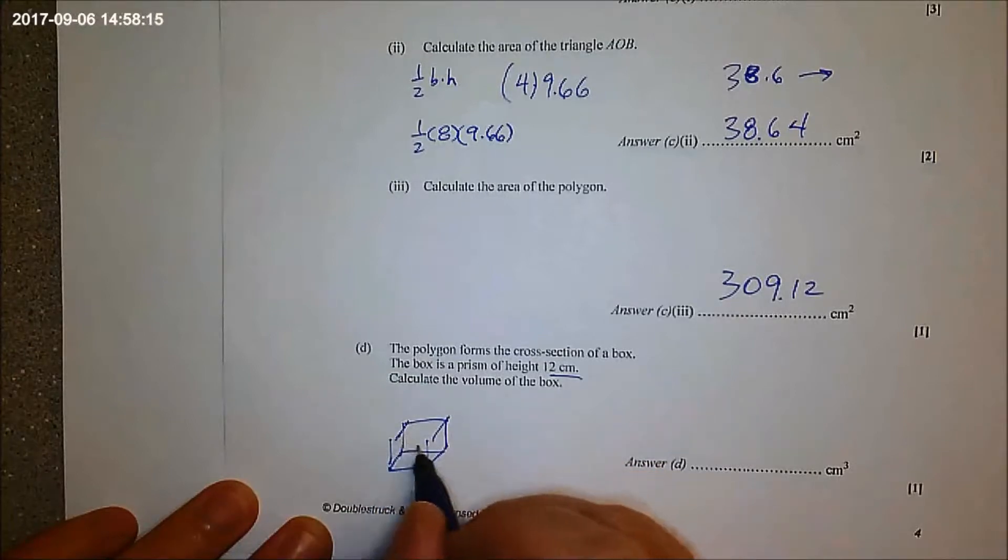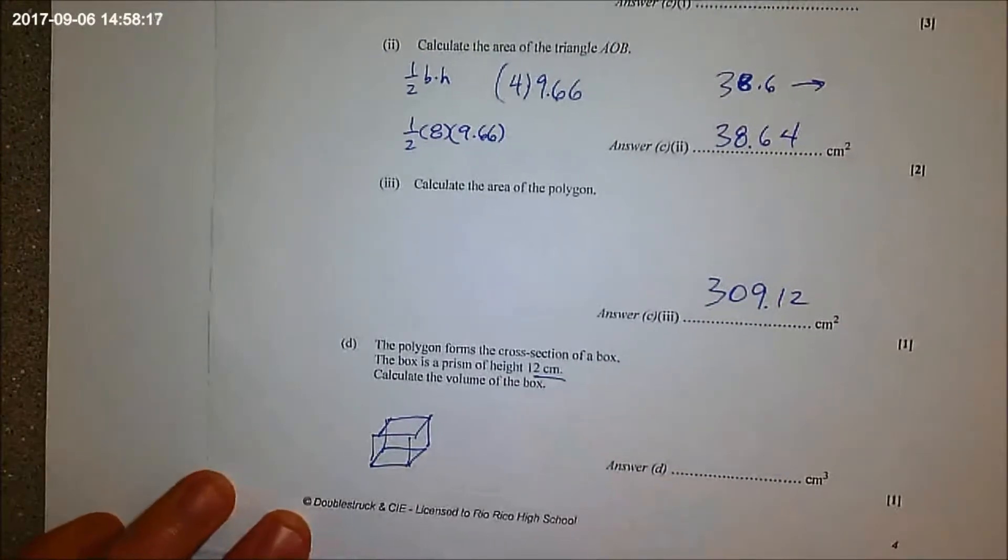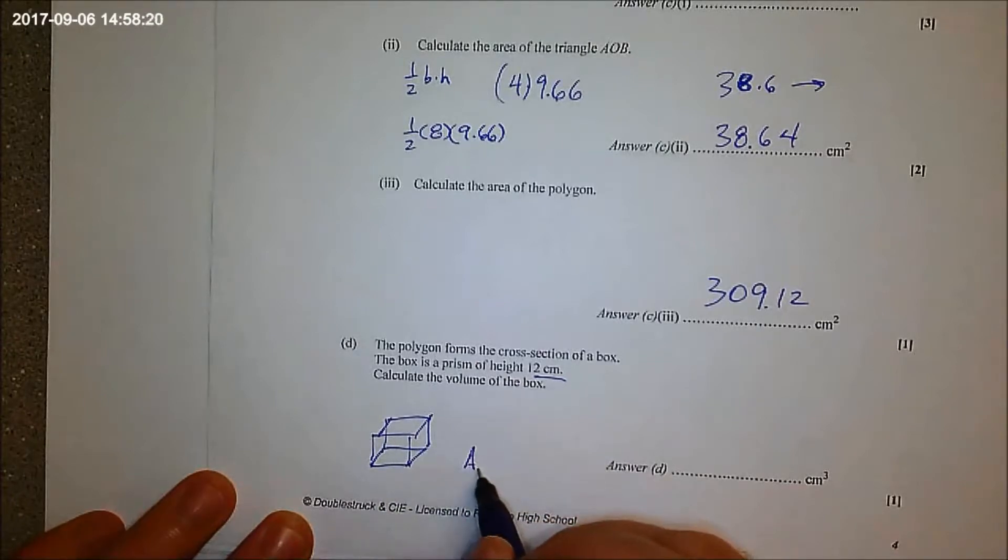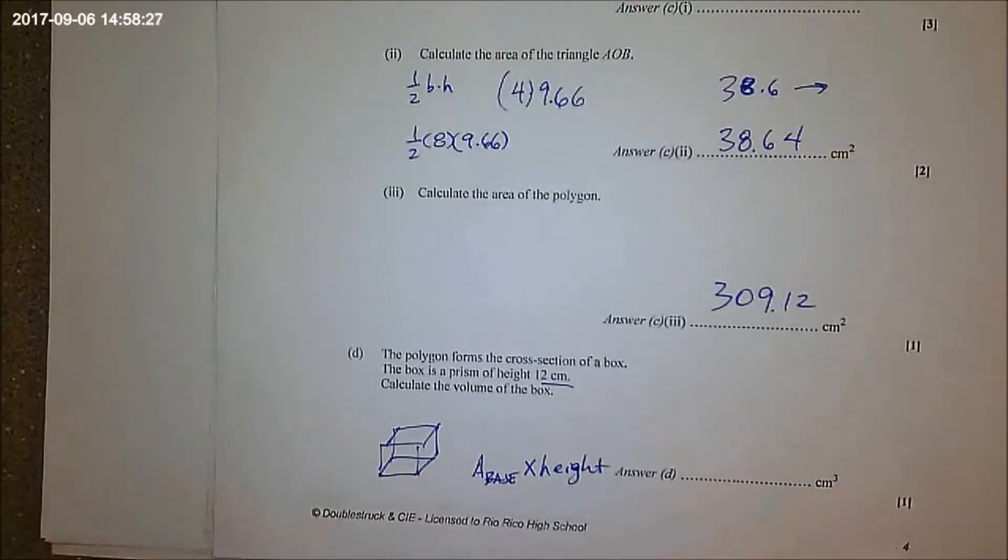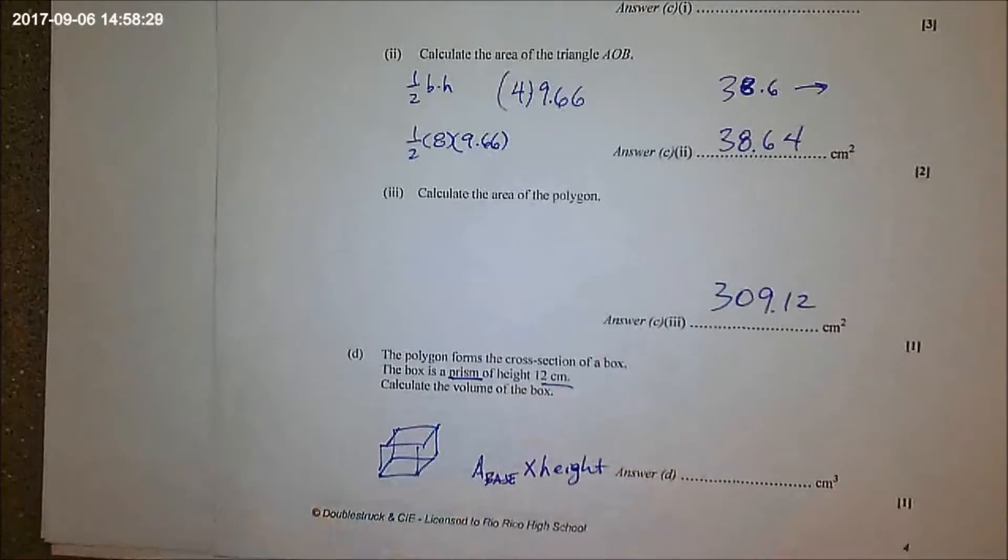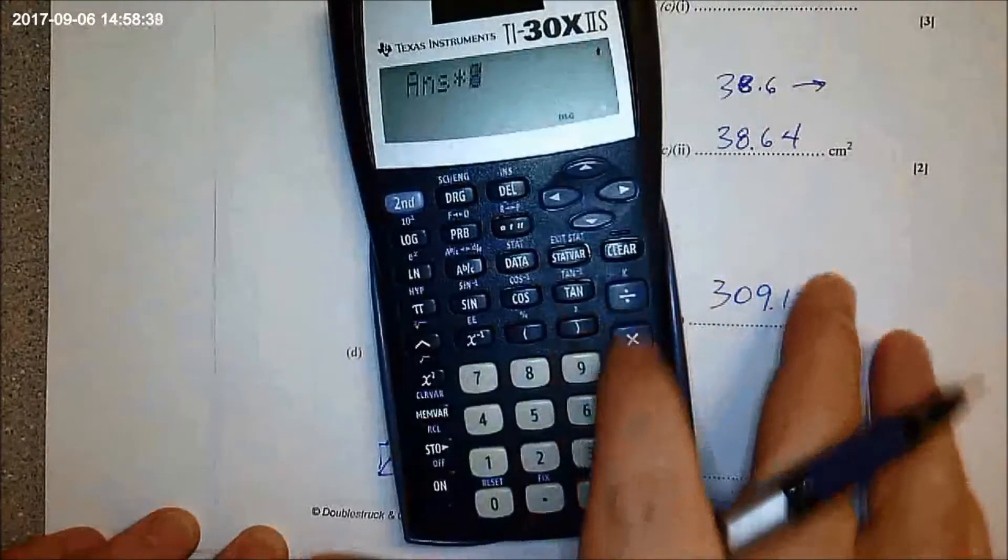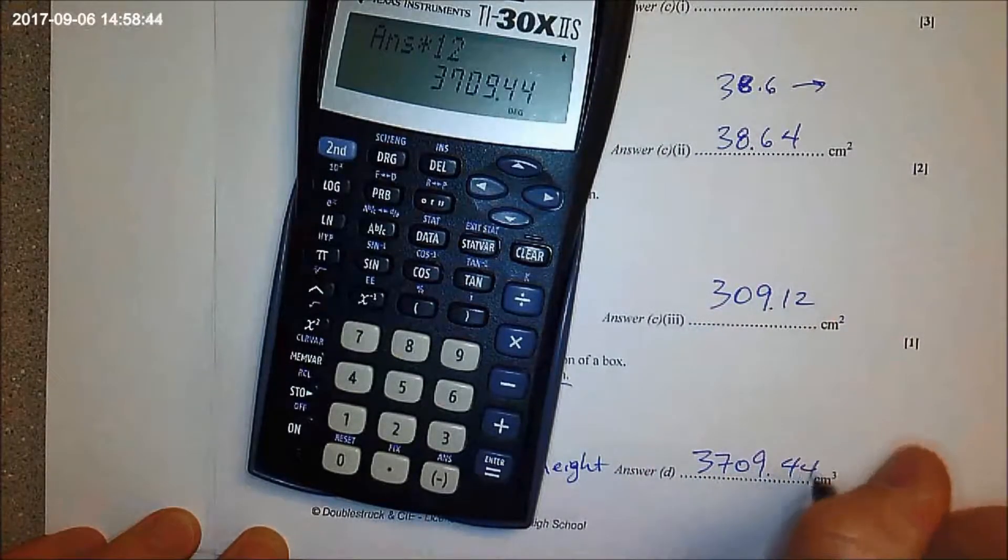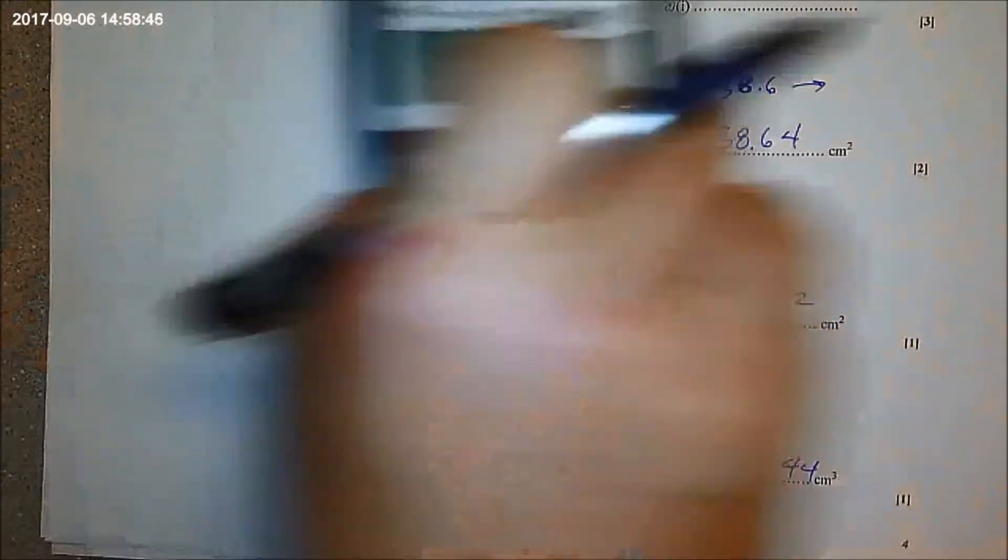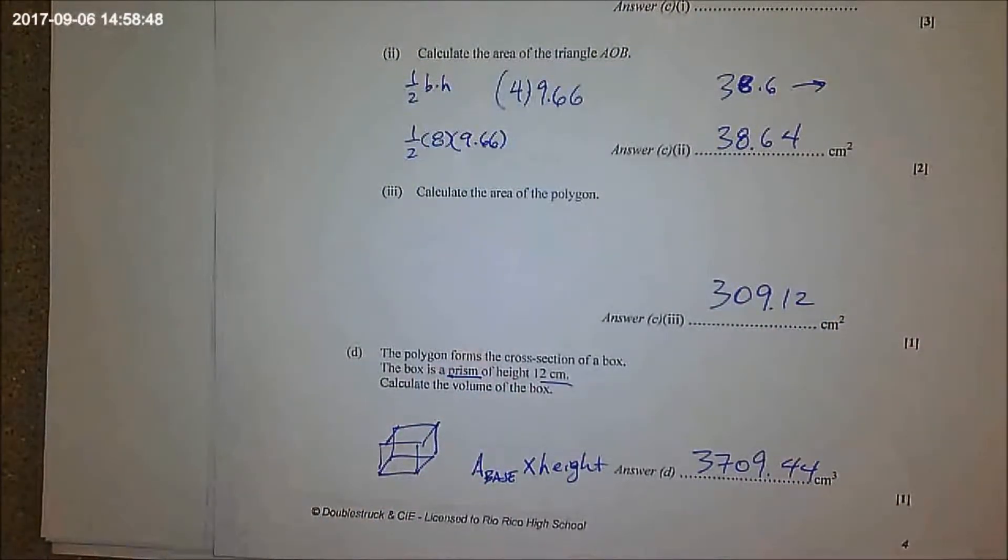Do you see? We have to find the volume. The volume is the area of the base times the height because it's a prism, that's how they work, just like the stack of paper remember? Yeah, so all you gotta do is take this answer times 12. That's it.